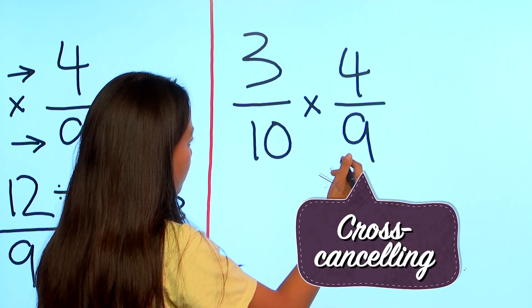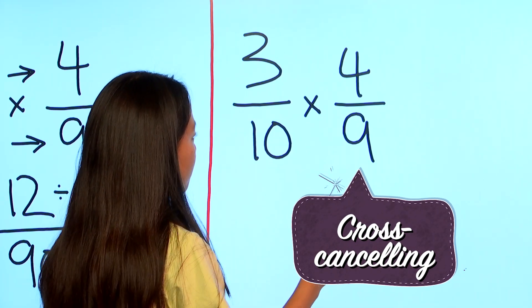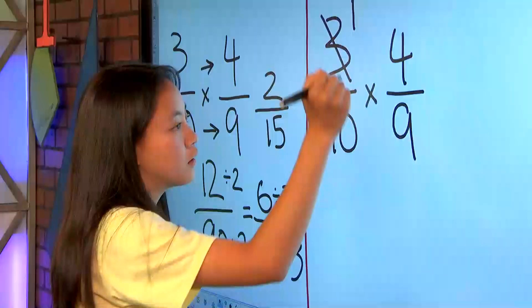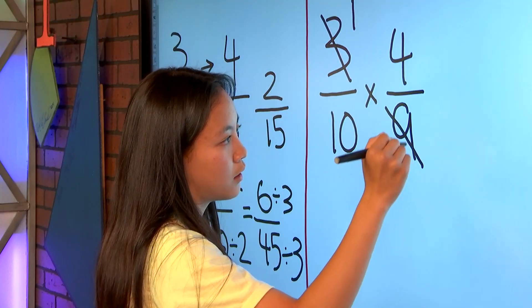So 3 and 9, you can divide them both by 3. So you divide 3 by 3, and that would make 1. And you would divide 9 by 3, and that would make 3.